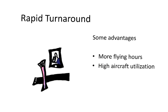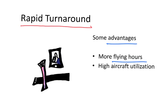Another low-cost feature is rapid turnaround. They aim to arrive at the airport and depart as soon as possible, minimizing the time between arriving and departing. If the aircraft spends less time on the ground, it stays more time in the air — more flying hours — which leads to higher aircraft utilization and a reduction in cost.